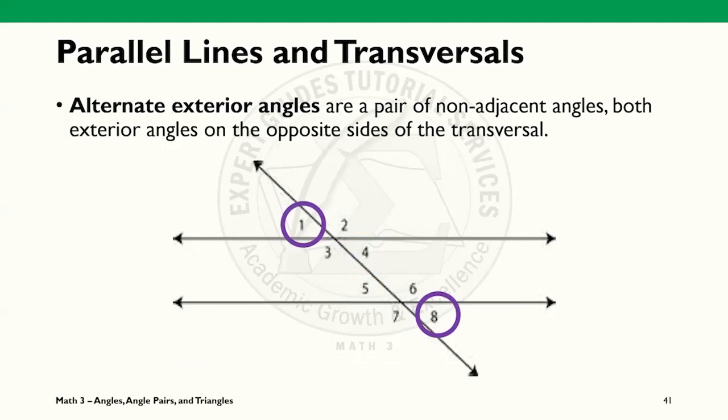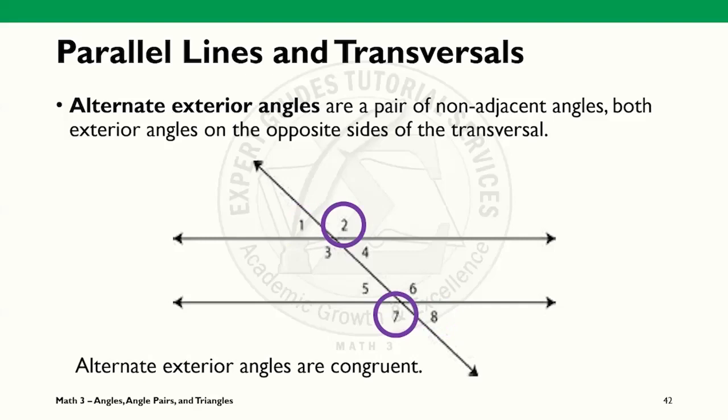Alternate exterior angles, on the other hand, are non-adjacent angles that are not bound by the parallel lines and lie on the opposite sides of the transversal line. Here we see angles 1 and 8 and angles 2 and 7 are both alternate exterior angles.